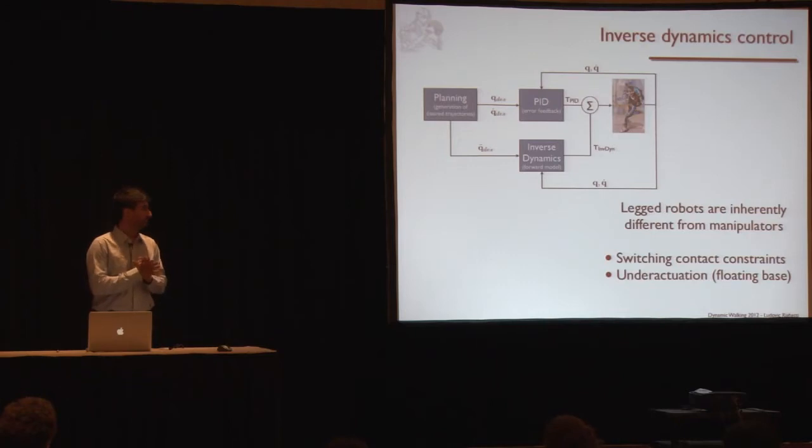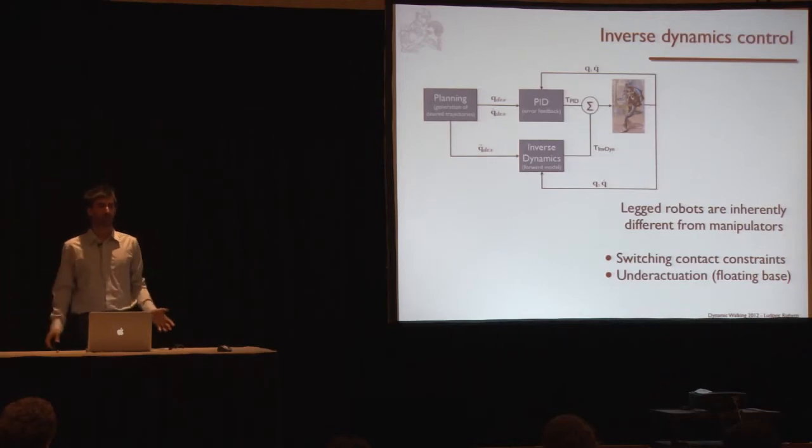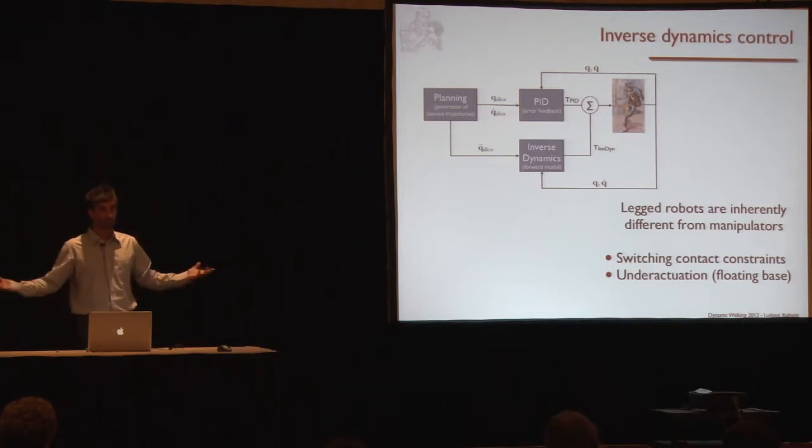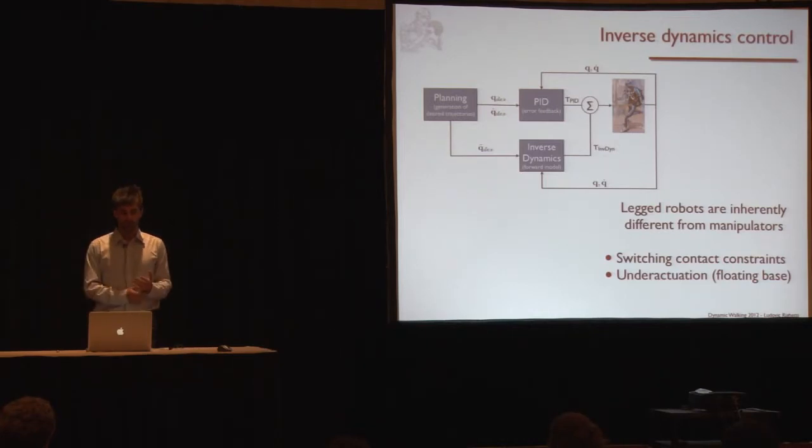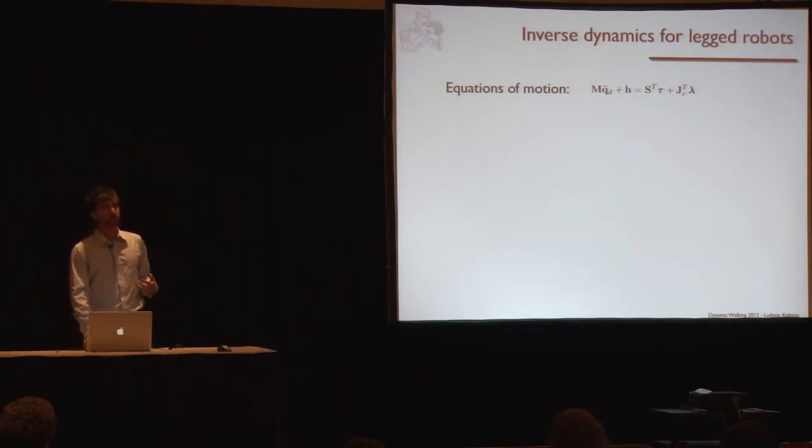This is something people use all the time in manipulators, fixed-base robots. We know that it improves tracking performance, it allows you to lower the gains and get very compliant control. Things are slightly different with legged robots because they're not manipulators, as I guess everyone knows here. We always have contact constraints that are switching all the time. One time I have two legs on the ground, one time I have one leg on the ground, sometimes my elbows are touching something. I can basically touch the world with any parts of my body, so I have to take this into account. I have to have a way to deal with that. And we're underactuated. The position of the robot with respect to the inertial frame is not actuated, so I don't have direct control on that. So the question is, how do we do inverse dynamics with that?